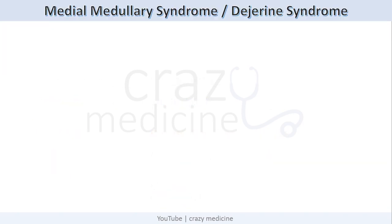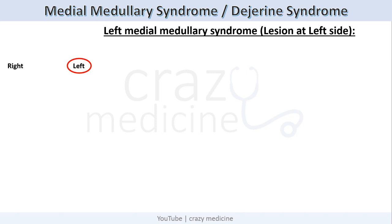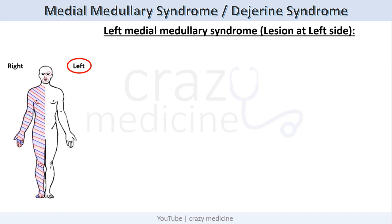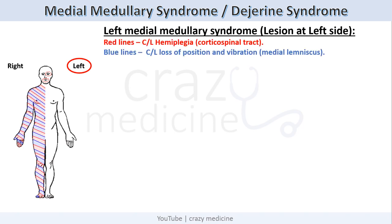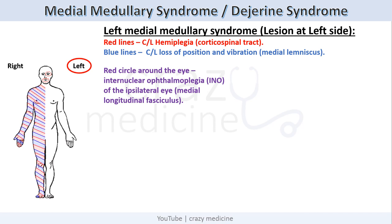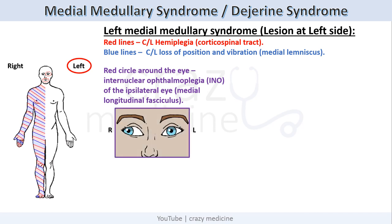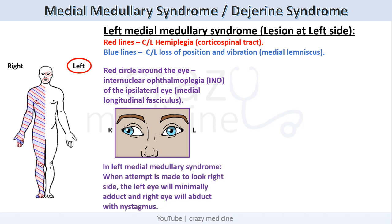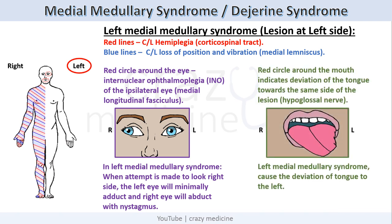For a practical example, suppose we have a patient with a left-sided lesion, i.e., left medial medullary syndrome. The red line indicates contralateral hemiplegia due to corticospinal tract involvement. The blue line indicates contralateral loss of position and vibration sense due to medial lemniscus involvement. The red circle around the eye indicates internuclear ophthalmoplegia of the ipsilateral eye due to MLF involvement — when attempting to look right, the left eye will minimally adduct and the right eye will abduct with nystagmus. The red circle around the mouth indicates deviation of the tongue towards the same side of the lesion due to involvement of the hypoglossal nerve.